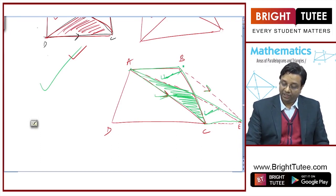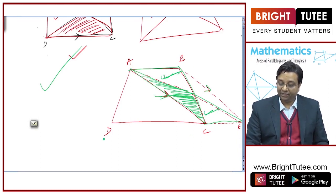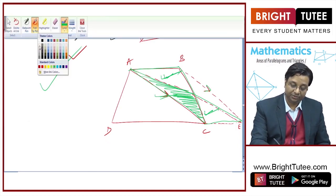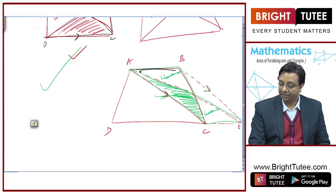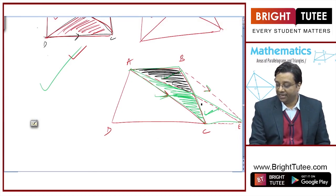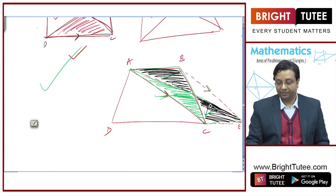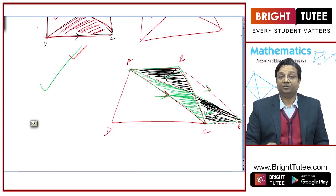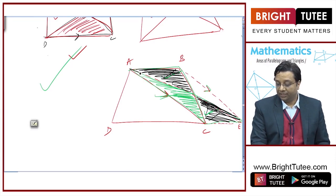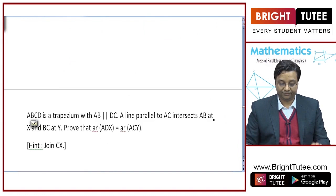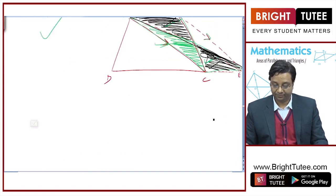So from this quadrilateral ABCD, if I cut this much area and add this area to the plot — the quadrilateral plot — this area will definitely be equal to this area. And now this quadrilateral will be converted into a triangular plot.